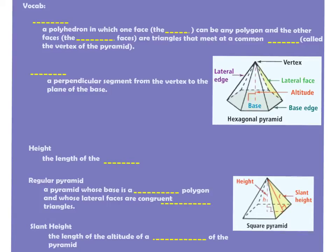So the first thing we have to do is start off with some vocab. A pyramid is a polyhedron in which one face, or the base, can be any polygon. But the other faces, which we're going to call lateral faces, are going to be triangles that meet at a common vertex. We call that vertex the vertex of the pyramid. So we've got this picture here. We have a face, which is called our base. That can be any polygon. But then all of our sides that are coming up, we call those lateral faces. They're all going to be triangles, and they meet at this point up here called a vertex.